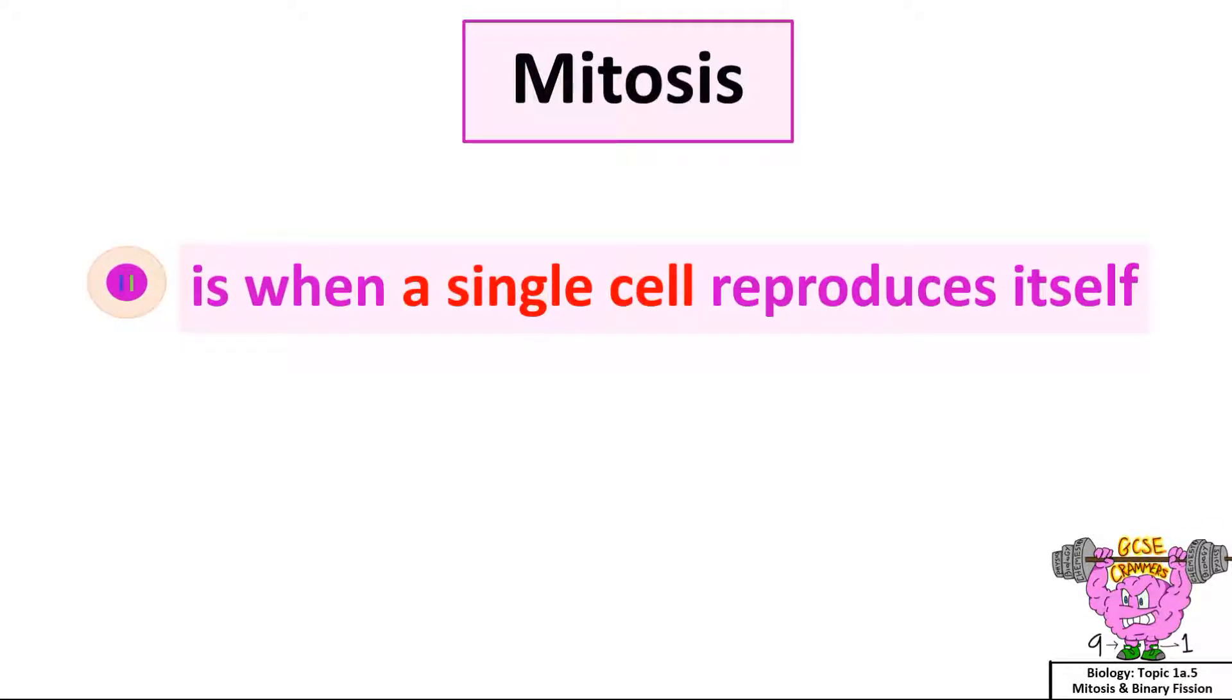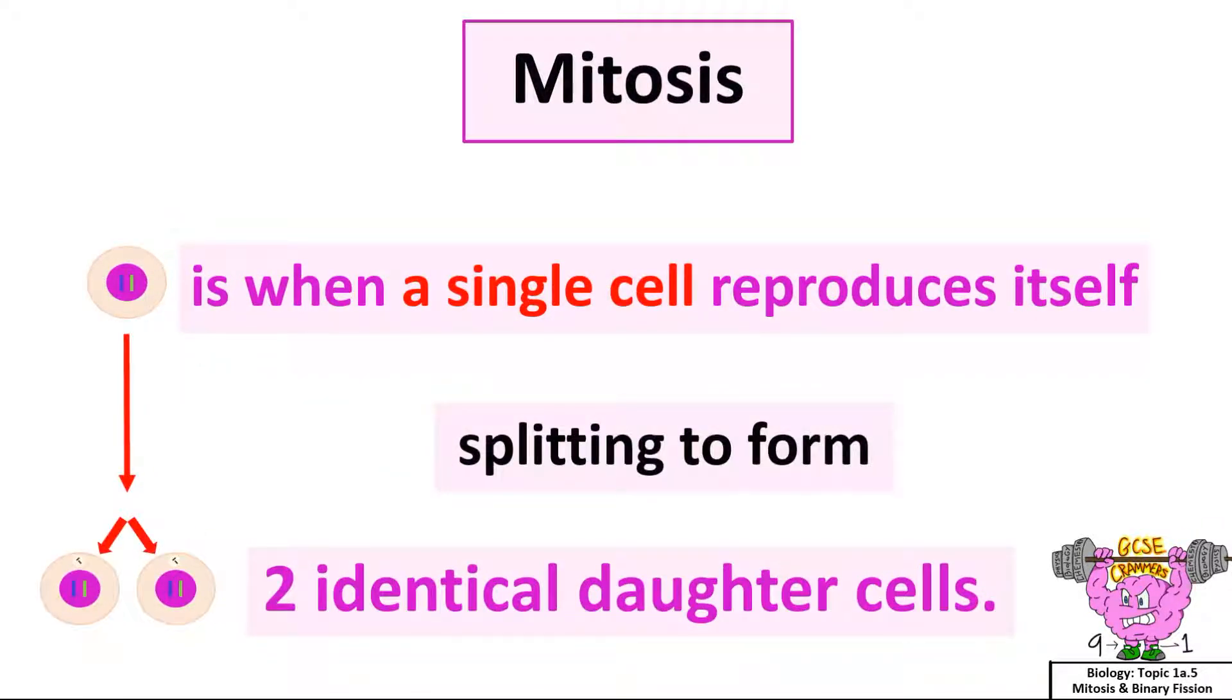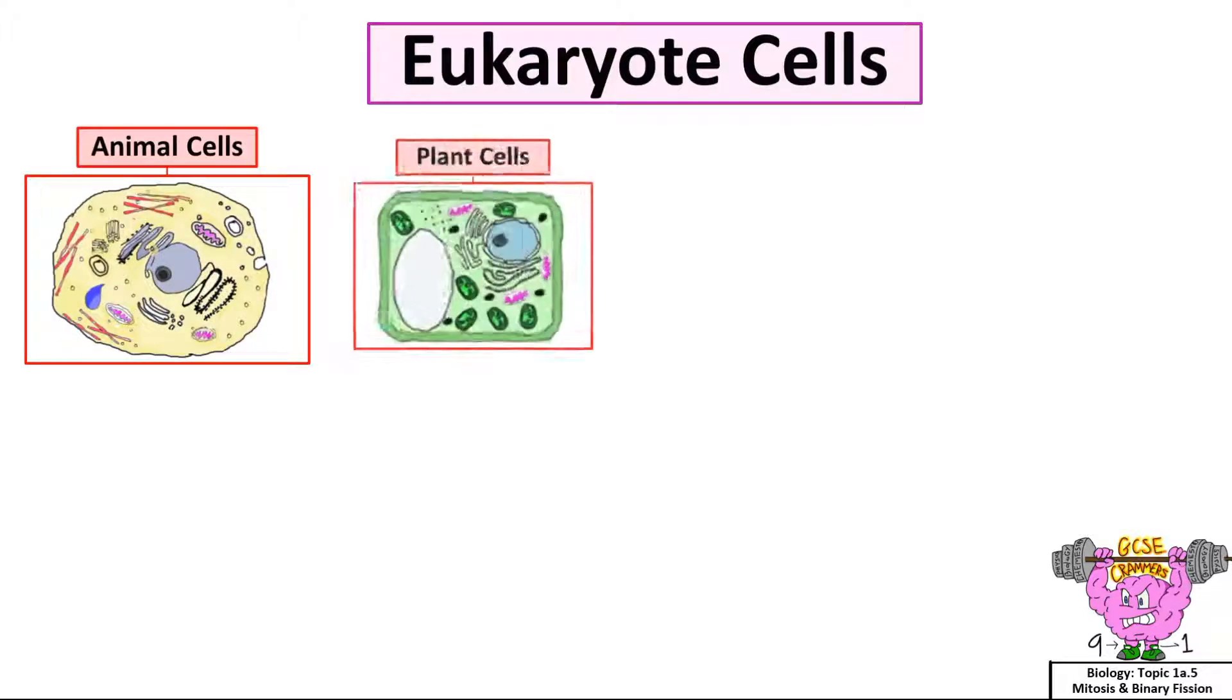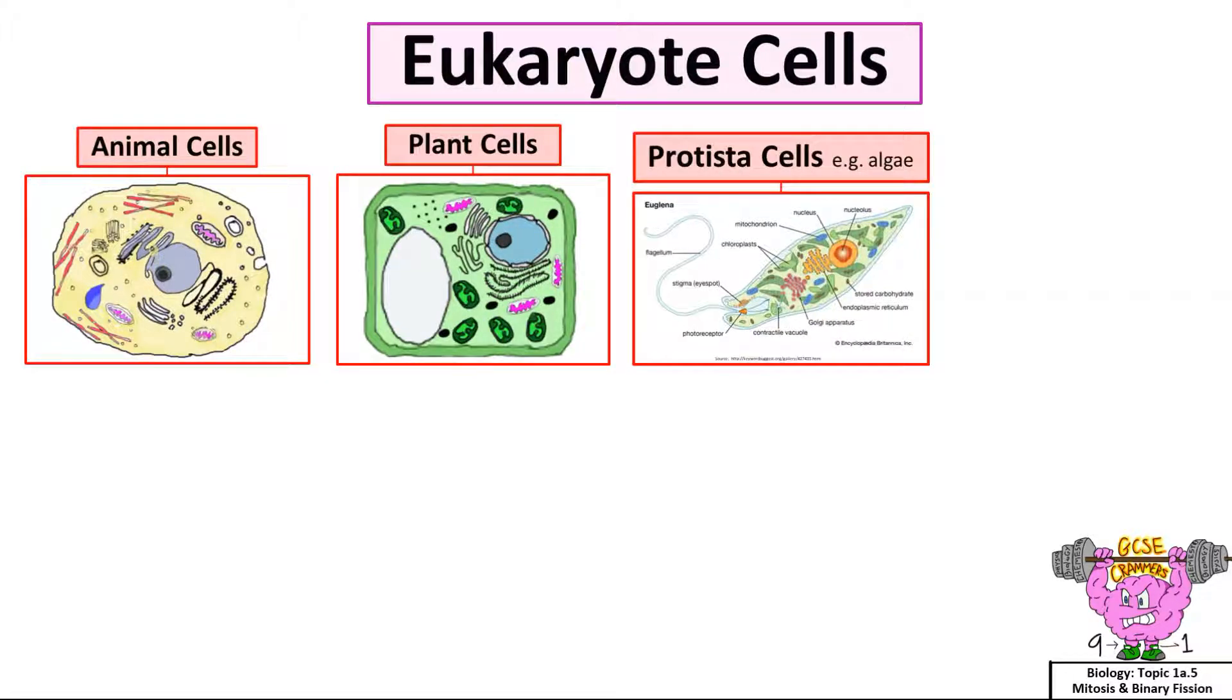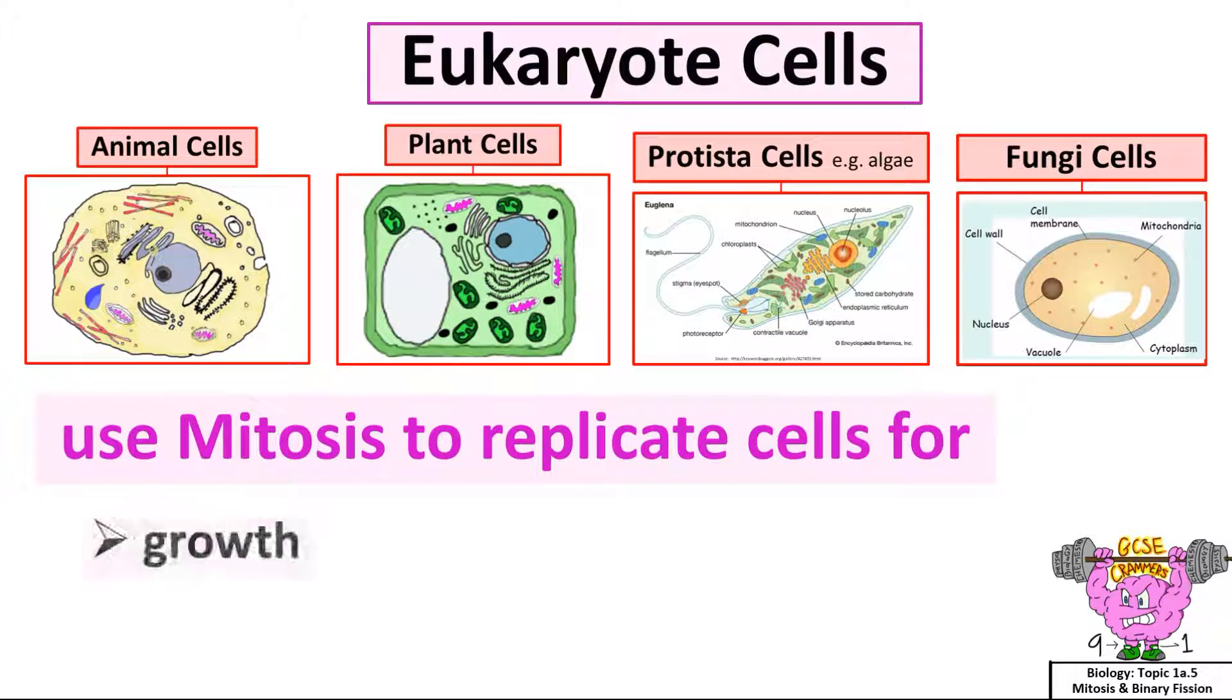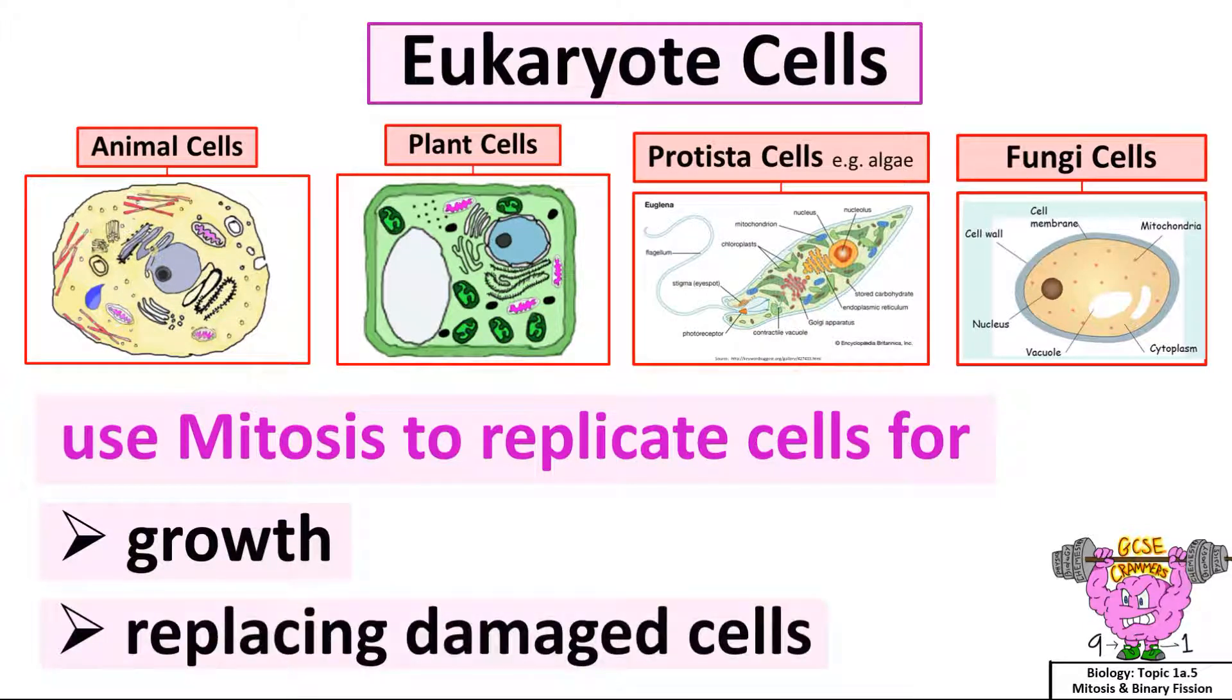Mitosis is when a single cell reproduces itself by splitting to form two identical daughter cells. Reproduction by mitosis only has one parent. Eukaryotic cells, that is any cell with a nucleus and organelles, for example animal cells, plant cells, protista cells like algae, and fungi cells like mushrooms,